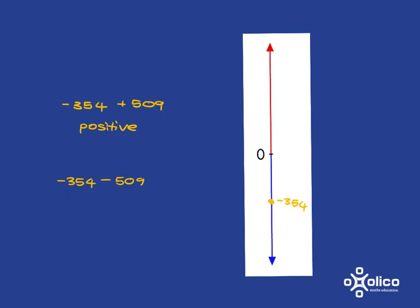On the other hand, if you're at negative 354 and you subtract, it means you're going to go down, and if you're going down a further 509, well, anywhere where you go down from negative 354 you're going to still stay in the negatives, and so this answer will be negative.